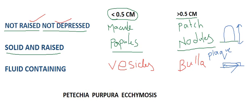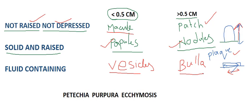To recap: not raised, not depressed, less than 0.5 cm is a macule; more than 0.5 cm is a patch. Solid and raised, less than 0.5 cm are papules; more than 0.5 cm are nodules and plaque — nodules have more vertical diameter and plaques have greater horizontal diameter. Fluid-containing lesions less than 0.5 cm are vesicles and more than 0.5 cm are bulla.